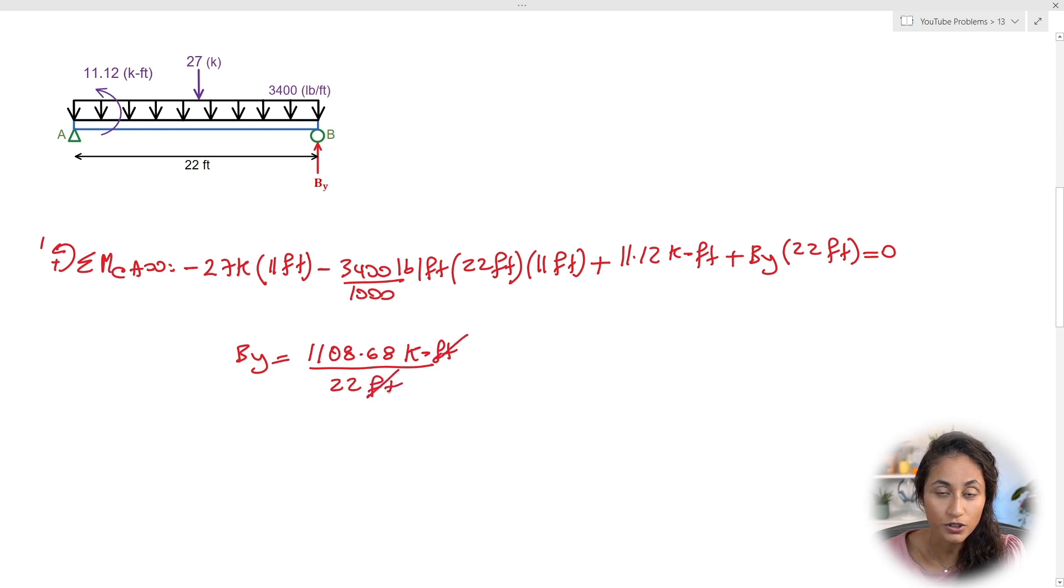kips·foot and then we're going to divide it by 22 feet. Now note how the foot and the foot cancels and then we're left with kips which is the unit that we want. Now if you plug in these numbers in your calculator you're going to get 50.